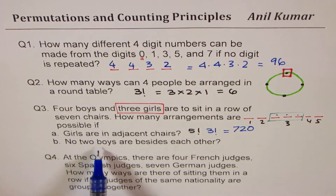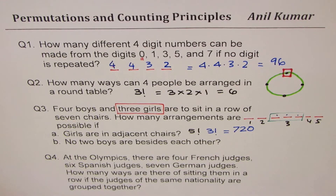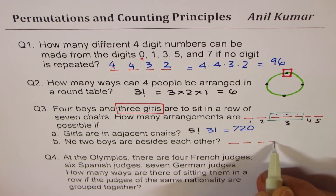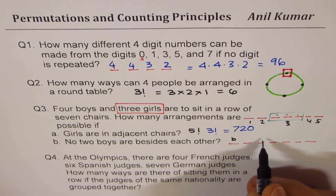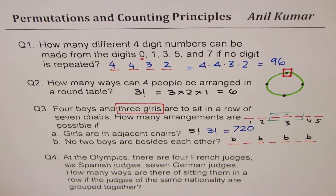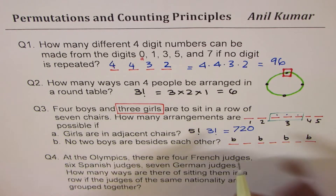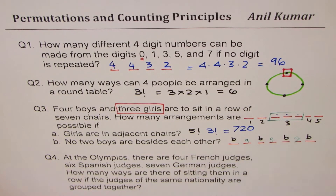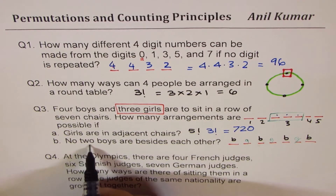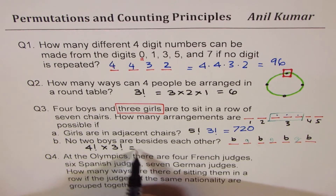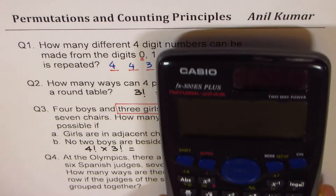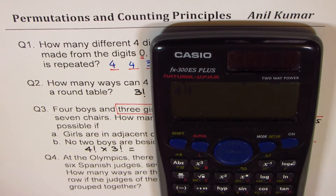Part B: no two boys are beside each other. With four boys and three girls in seven chairs, the boys must be placed alternately so that girls sit between them. The four boys can be arranged in 4! ways and the three girls in 3! ways. So the answer is 4! × 3!.